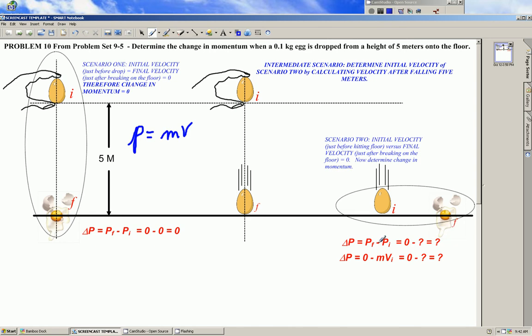So we know the final momentum is 0 since the final velocity is 0. The question is, what's the initial momentum? To determine that, we need to know the initial velocity. That initial velocity in scenario 2 is actually the final velocity of this intermediate scenario, where we're dropping the egg from the 5 meter height to a point just before it touches down. How do we calculate this final velocity?